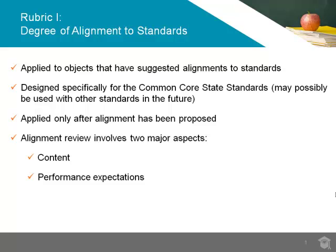A degree of quality can only be assessed after alignment to a particular standard or standards has been assigned. Alignment review of standards involves two major aspects: content and performance expectations. The content addressed in the object should match the content addressed in the proposed standard, and evaluating the alignment of the performances required is equally important.